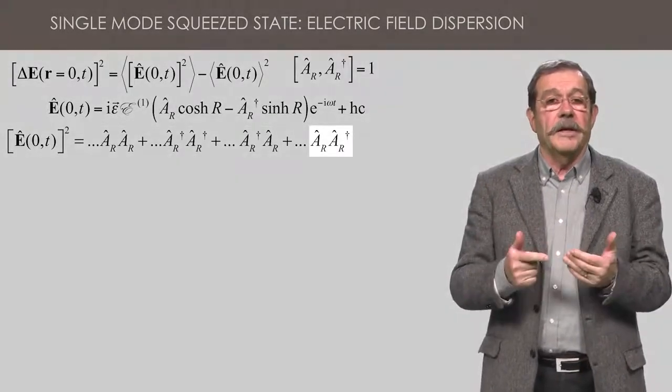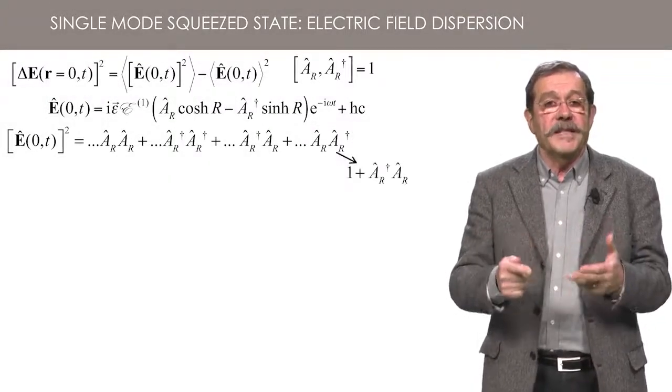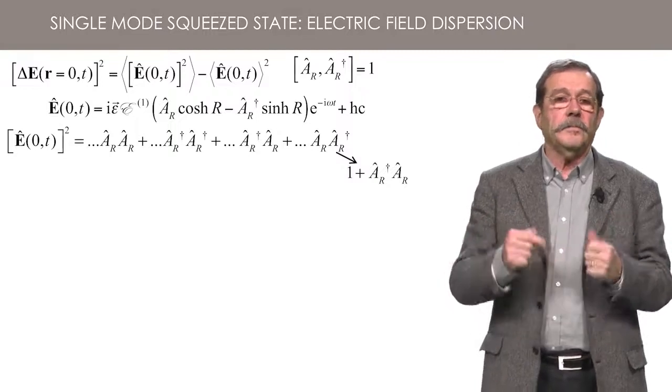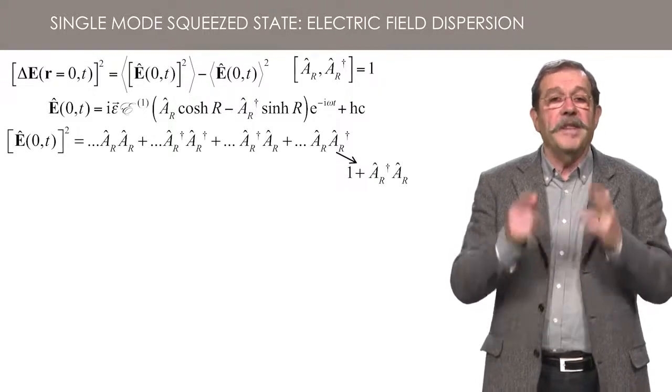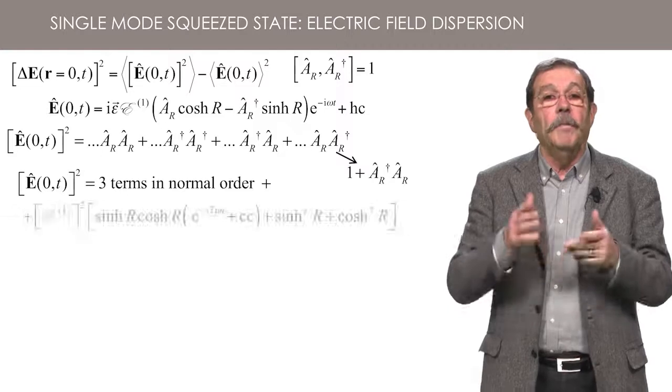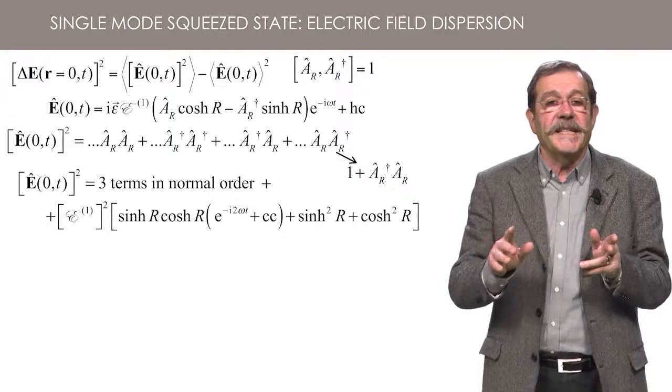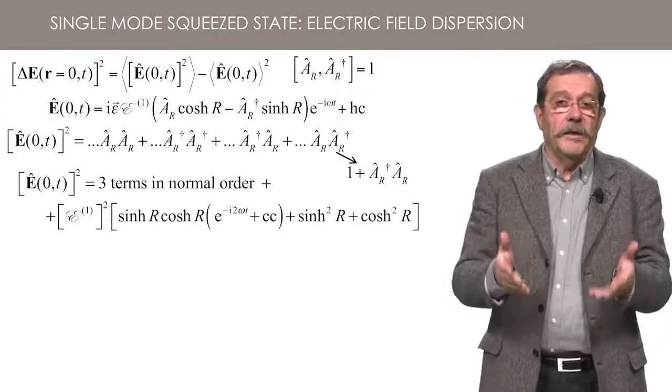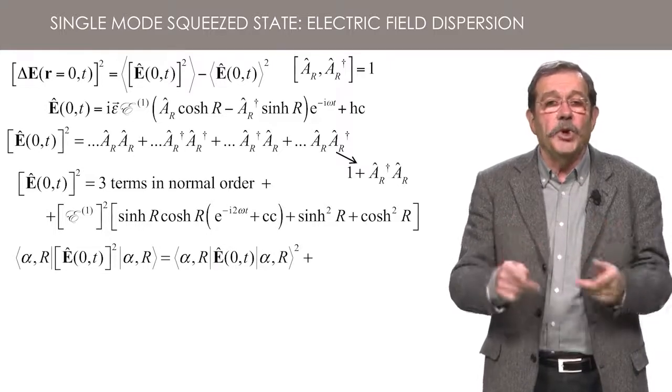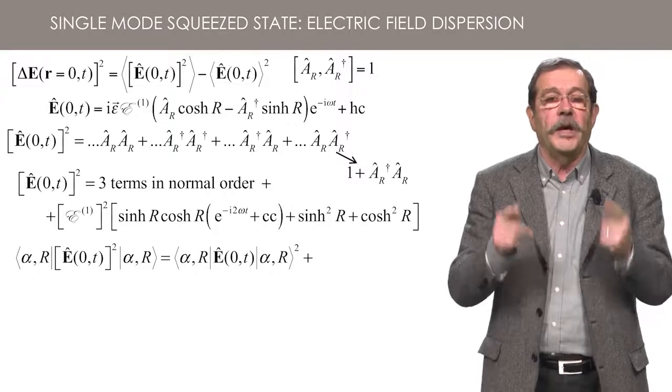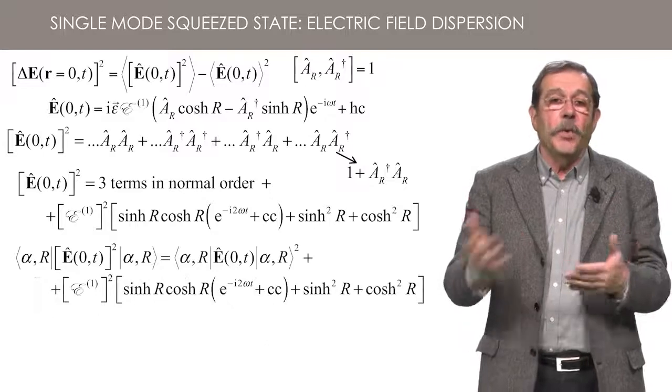Then you replace the same AR, which is not normally ordered, by 1 plus A dagger R AR. Grouping this last term with the existing term, you are then left with three normally ordered terms plus a scalar term. When you take the average in the squeezed state alpha R, in order to calculate the variance, the normally ordered terms give a contribution exactly equal to the square of the average of E, and you have in addition the scalar terms which are the variance.